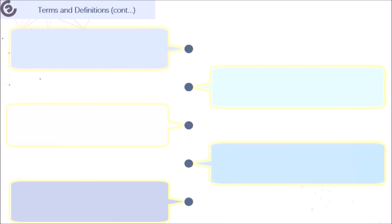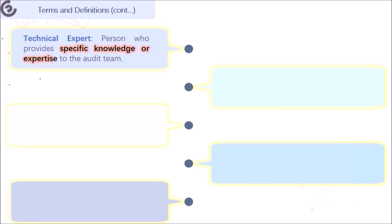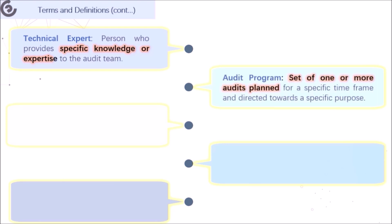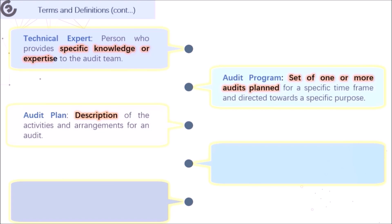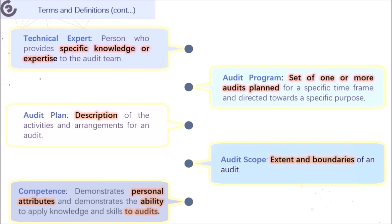Other important characters include the technical expert, a person who provides specific knowledge or expertise to the audit team. Audit program means the set of one or more audits planned for a specific timeframe and directed towards a specific purpose. Audit plan is the description of the activities and arrangements for an audit. Audit scope indicates the extent and boundaries of an audit. Finally, competence demonstrates personal attributes and the ability to apply knowledge and skills to audits.